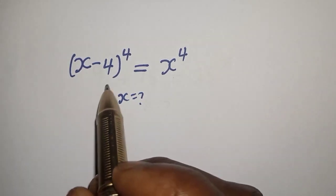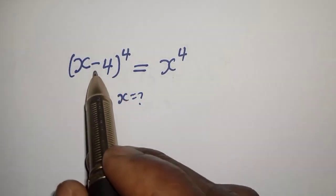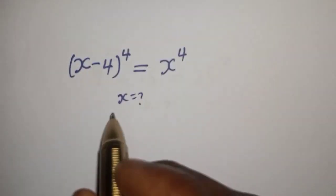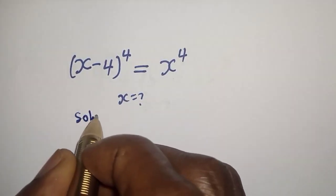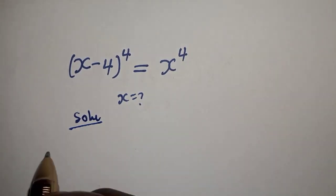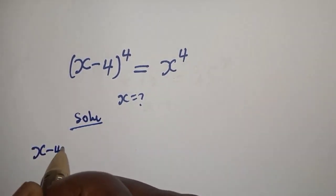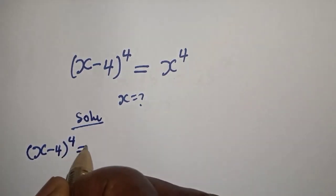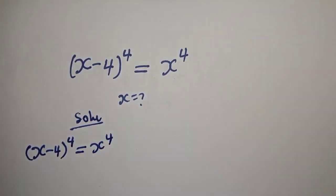Hello, how to solve for s from this equation: s minus 4 raised to power 4 is equal to s raised to power 4.